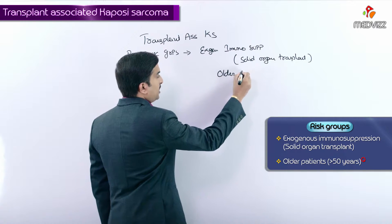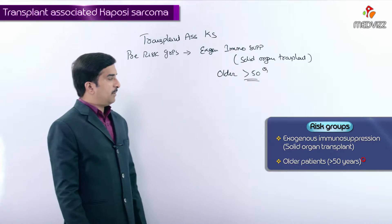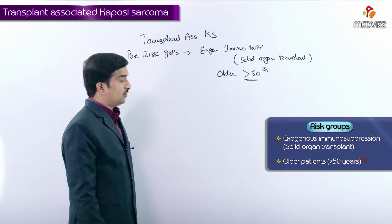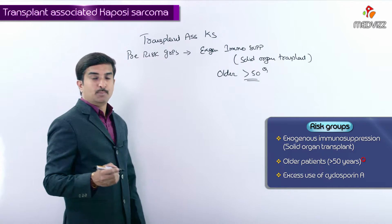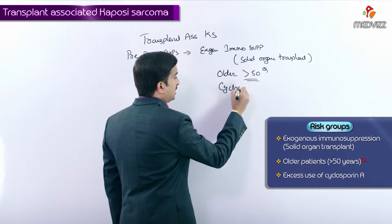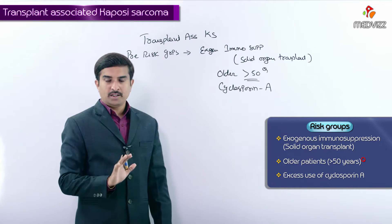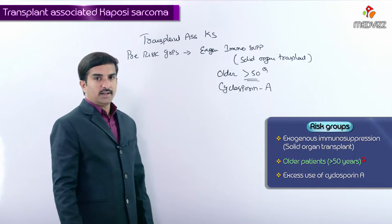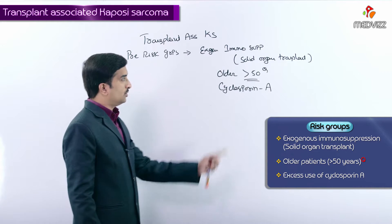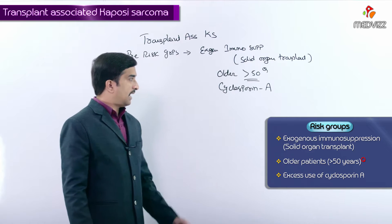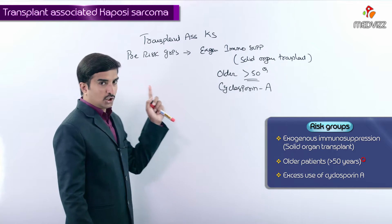Older patients greater than the age of 50 are also in the predominant risk groups, with a male-to-female ratio of 1:1, so there is no gender predominance. It is also associated with excessive use of cyclosporine A. So the major risk groups are: older patients greater than age 50, without gender predominance, who have undergone exogenous immunosuppression mainly due to solid organ transplantation, and excessive use of cyclosporine A.